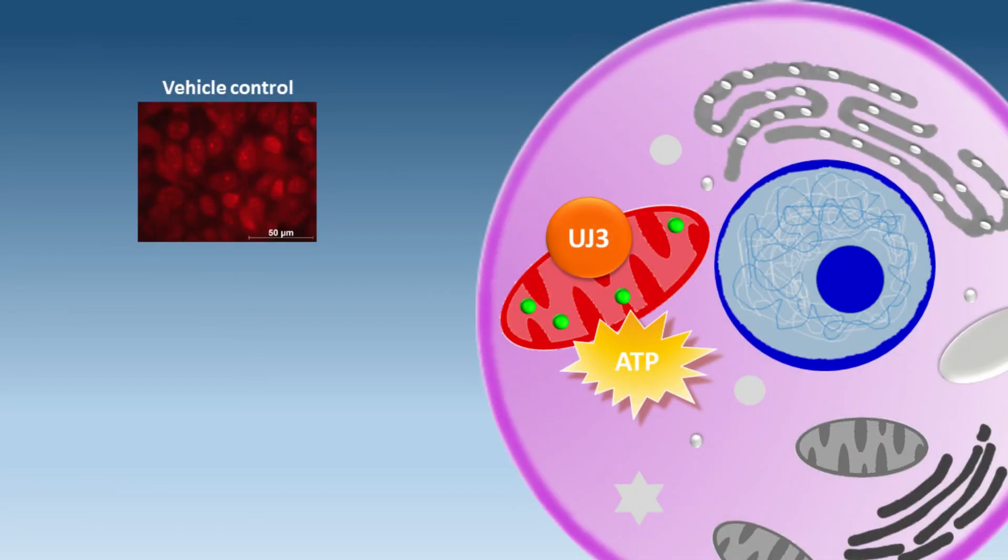On the left, at vehicle control, we see intact active mitochondria in cancer cells, stained in red. There are lots of them, which means there's a high energy output.